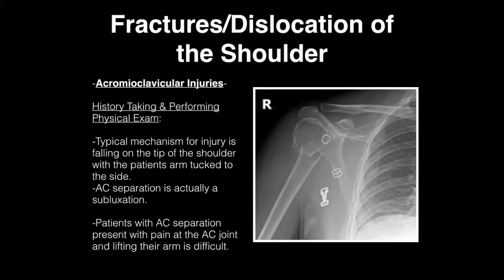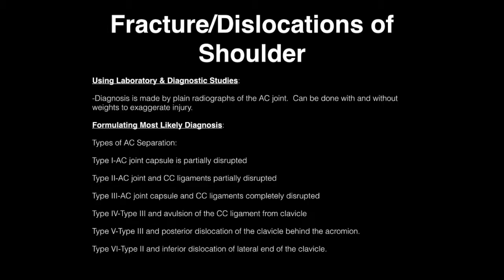Now I want to talk about fractures and dislocations of the shoulder, starting with acromioclavicular injuries. A typical mechanism is the tip of the shoulder being fallen onto with the patient's arm tucked to the side. We use the term AC separation, but it's actually AC subluxation. Patients present with pain at the AC joint and difficulty lifting their arm. Diagnosis is made by plain radiographs of the AC joint, with or without weights to exaggerate the injury. There are several grades of AC separation.